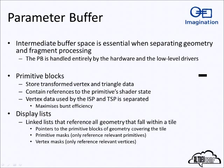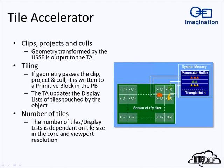The tile accelerator builds the parameter buffer. It does the normal first-stage graphics pipeline work — clipping, projecting, and culling — takes the transformed data and decides if it's actually going to be on screen, then makes the primitive blocks and display lists. The number of tiles is determined by how much room there is on the core to process data — in the design phase, the number of fragments kept on core determines tile size. Typical sizes are 16x16 pixels, with later processors moving to 32x32 as cores get larger and process technology shrinks.